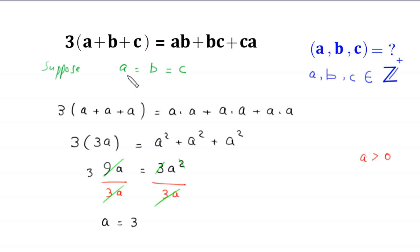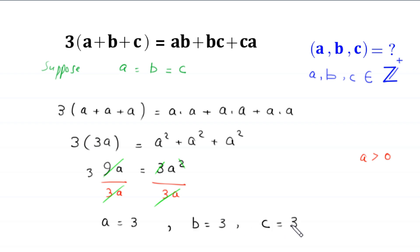Since a is equal to b is equal to c, we get b is equal to 3 and c is also equal to 3. So from this case we get the first pair of solutions: a, b, c is equal to 3, 3, 3.